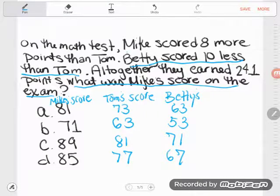Okay now so I have all these possibilities - either these were the three people's scores in A, or these were in B, or these in C, or these in D. Now let's look at the last question: it says altogether they earned 241 points. So we need to see which one of these lines would actually total to 241. Let's do this one first. If I were to add 81 plus 73 plus 63...